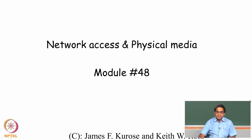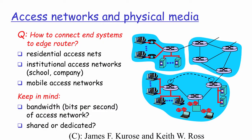In this module we will discuss the different types of network access that are typically possible, as well as briefly talk about the different types of physical media encountered in a network topology. When it comes to access networks, how do we connect the different end systems to the router? There are different types of mechanisms: a residential access network, an institutional access network, or a mobile access network.